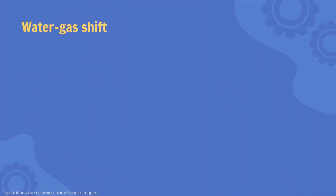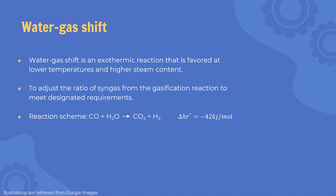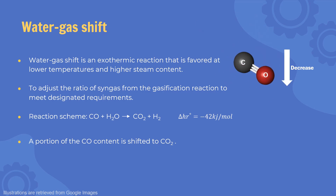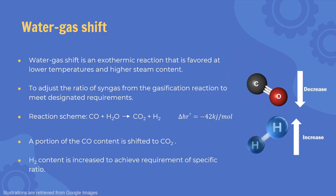Next, water gas shift is carried out. This is an exothermic reaction that is favored at lower temperature and higher steam content, which is to adjust the H2 to CO ratio of syngas to meet designated requirements. Some of the CO content is shifted to carbon dioxide whereas H2 content is increased.